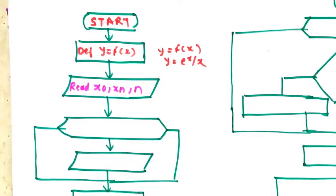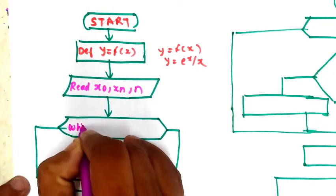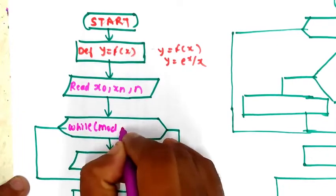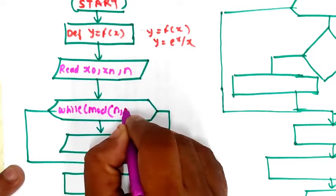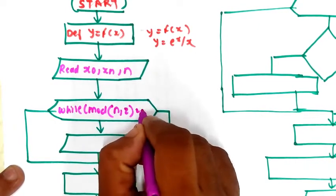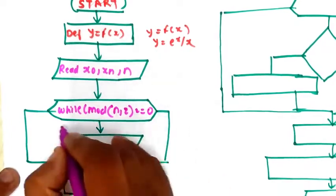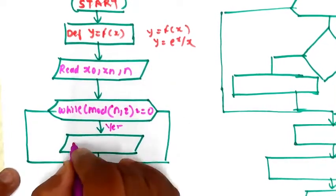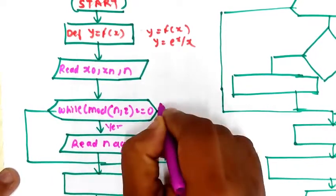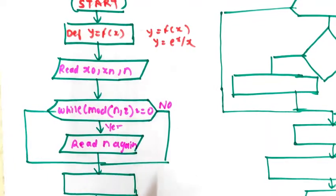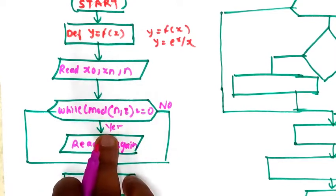Next we have to check whether the number of steps n is a multiple of 2 or not. For that, we use the modulus operation: n mod 2 equal to 0. If yes, then we have to read n again. If no, then we go further. So we check if n is a multiple of 2 or not.